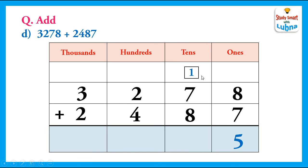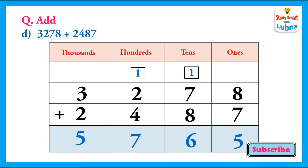Now we will add the tens. 1 plus 7 is 8, and 8 plus 8 is 16. We will regroup the tens and write 6 in the tens column and carry 1 to the hundreds column. After this we will add the hundreds: 1 plus 2 is 3, and 3 plus 4 is 7. Then we add the thousands. In the thousands column we have 3 and 2. Simply 3 plus 2 equals 5. So we have got 5765 after adding 3278 and 2487.